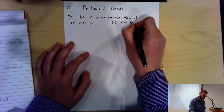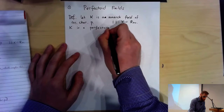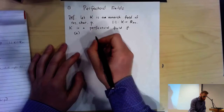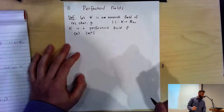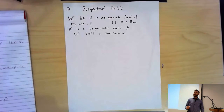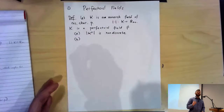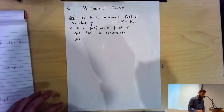So I call K perfectoid — K is a perfectoid field — if two conditions hold. Condition A is that the value group of K, of the unit group of K, should be non-discrete. Which means that K is not going to be the field Q_P of p-adic numbers. That value group is cyclic — it's just Z — whereas the value group of K has to be big.